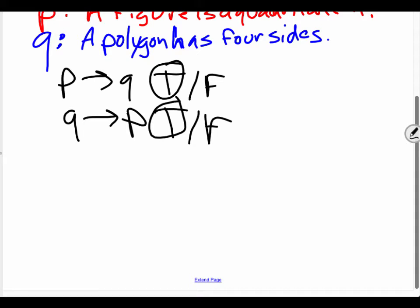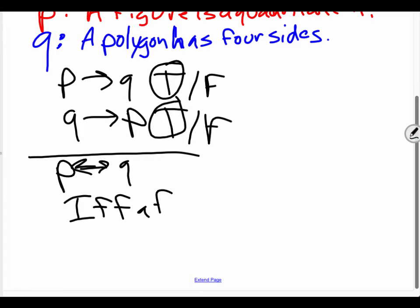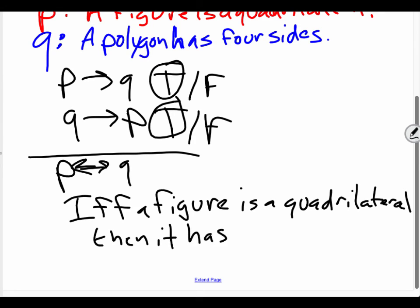So now the biconditional statement goes like this. Because P can imply Q and Q can imply P, I would say if and only if a figure is a quadrilateral, then it has four sides. Okay?